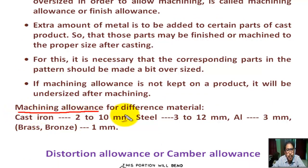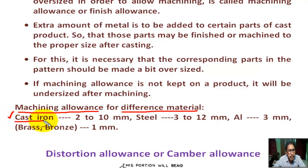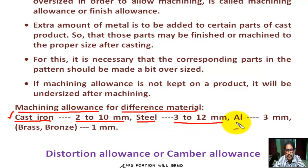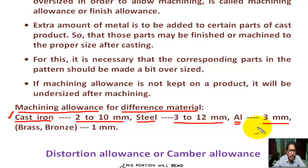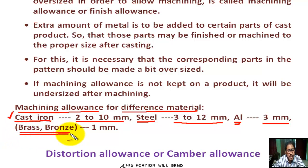Machining allowance for different materials: for cast iron, machining allowance given is 2 to 10 mm; for steel, 3 to 12 mm; for aluminum, approximately 3 mm; for brass and bronze, approximately 1 mm.